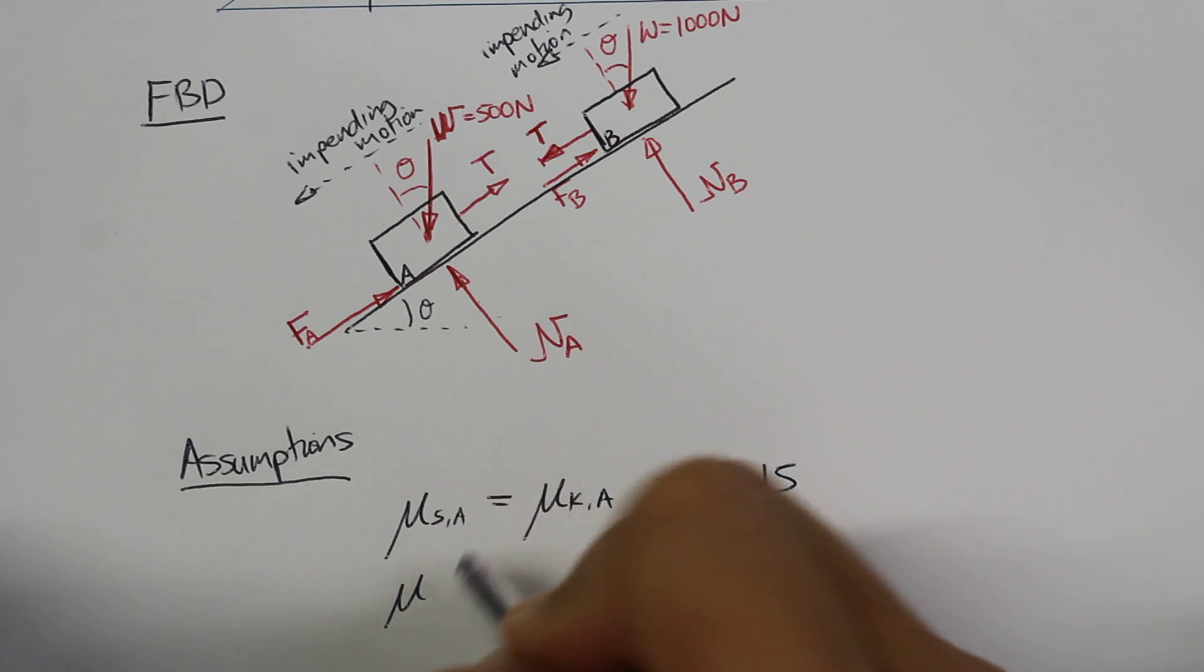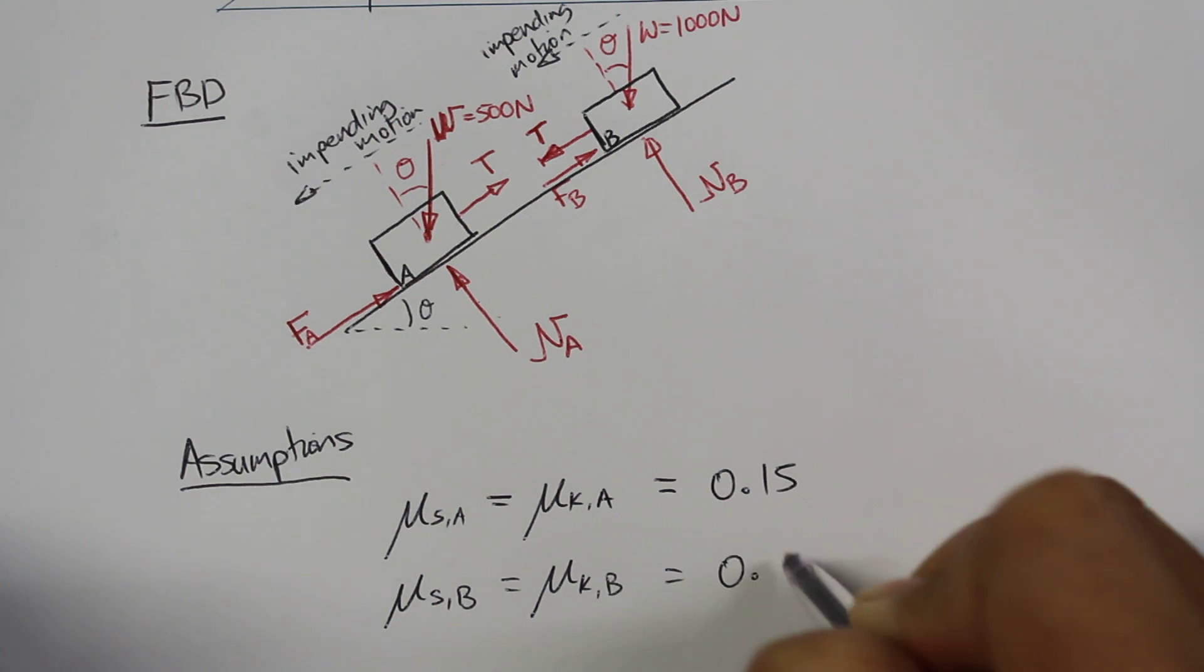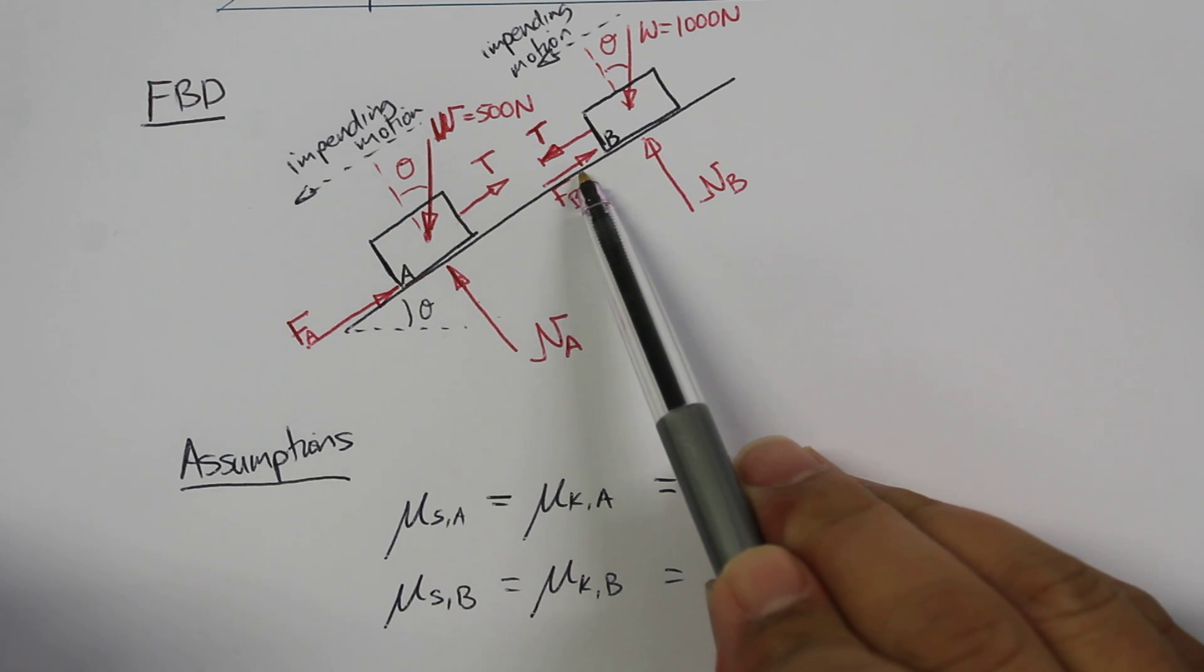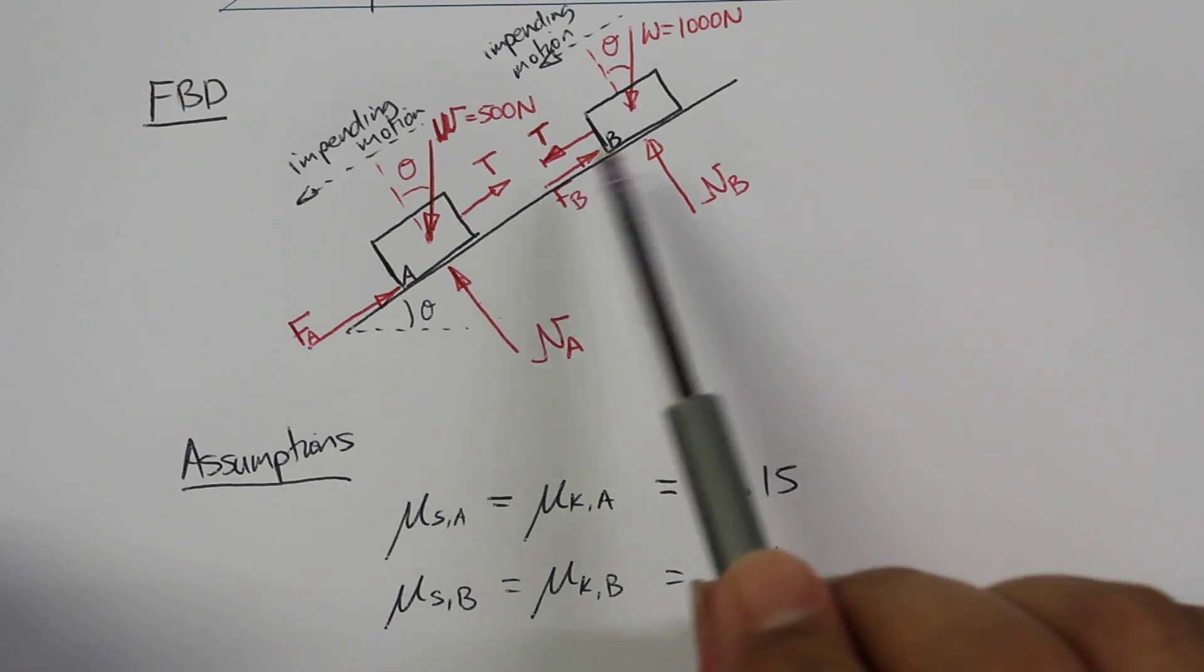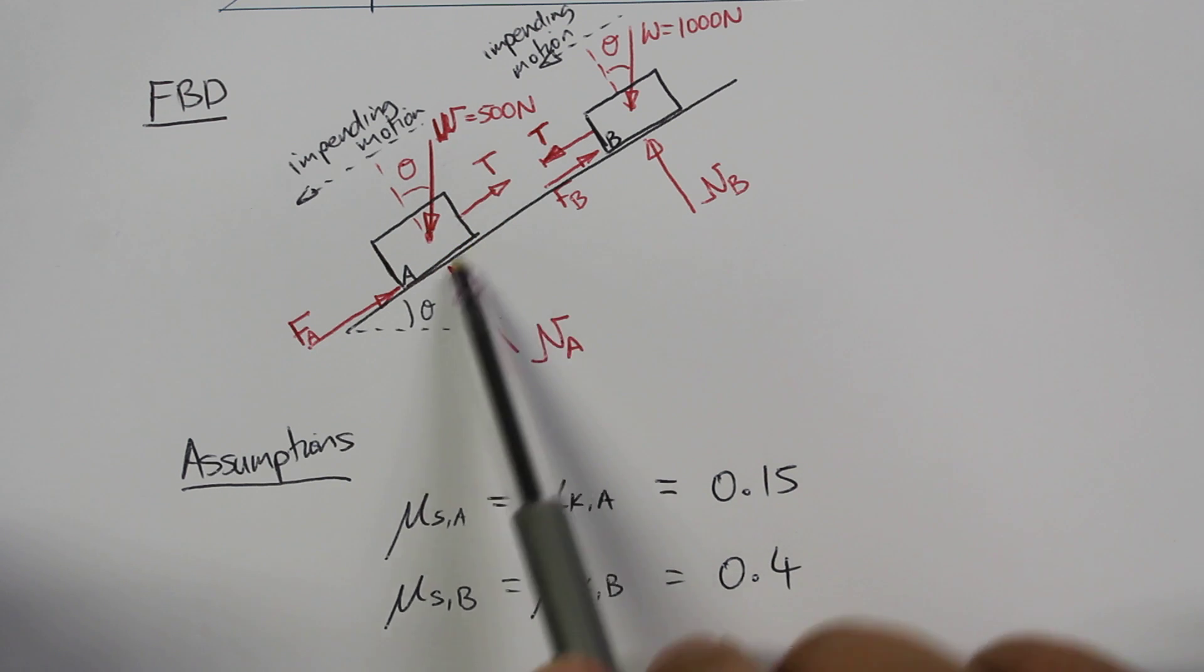Second, the static coefficient of friction for block B is equal to the kinetic friction coefficient for block B. That's going to be equal to 0.4. This makes the assumption that this friction coefficient is going to be the same for the static and the kinetic case. It's less important for block B, but it's more important for block A because it's already in a state of being able to be in a kinetic state of motion. But it should be okay just using our static friction coefficient.